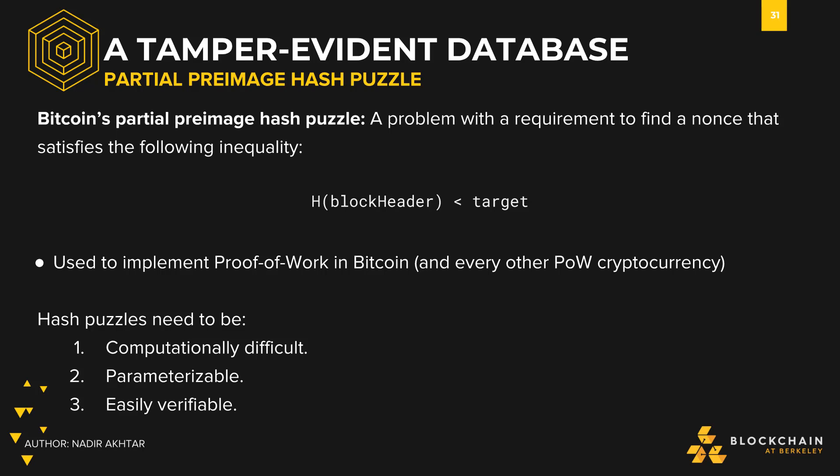This condition is how proof-of-work is implemented in Bitcoin and almost every other popular proof-of-work cryptocurrency. To satisfy our needs for a puzzle, these hash puzzles need to have three characteristics: they have to be computationally difficult, parameterizable, and easily verifiable.